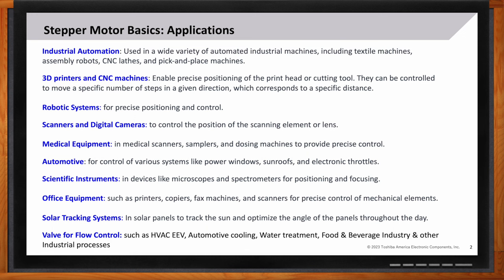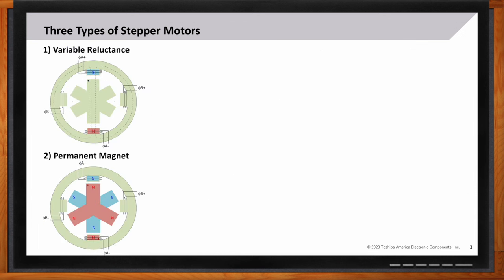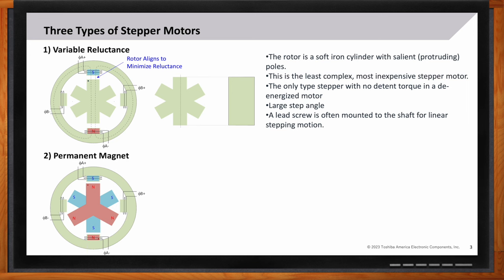Fantastic. Now, Doug, are there more than one type of stepper motor? Yes, from a construction perspective, there are three main types. The first and simplest is the variable reluctance motor. In this case, the rotor will align to minimize the reluctance. The rotor shaft is typically a soft iron cylinder with salient, meaning they stick out poles. It's the least complex, most inexpensive. And it's also the only type of stepper motor that has no detent torque, meaning when the stator is not energized, there's no torque. It does have a large step angle, however.